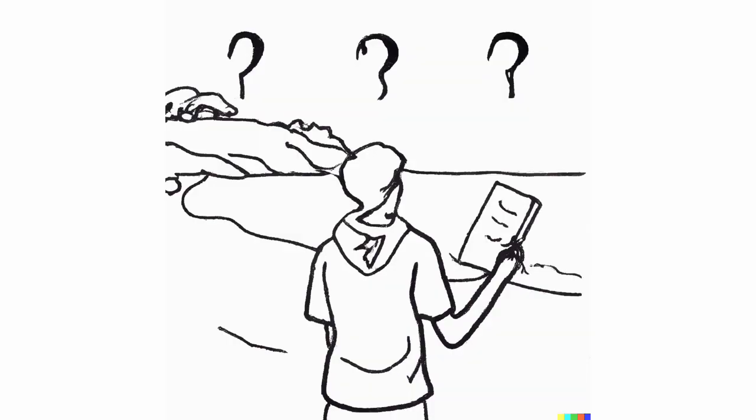The first concerns delayed gratification. Consider the following example. It is a sunny weekend. You can either study today and go to the beach tomorrow, or you can go to the beach today and study tomorrow.